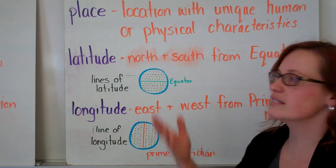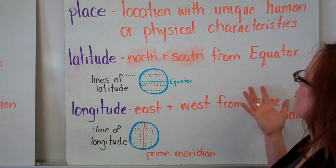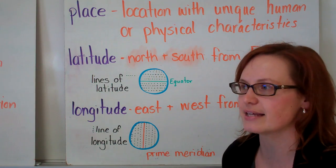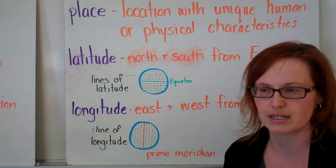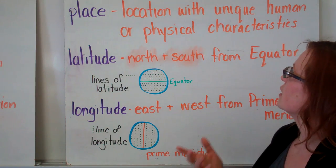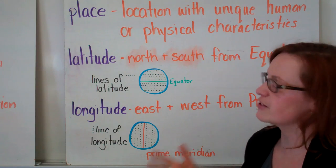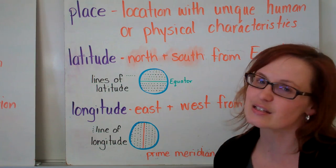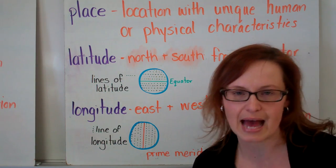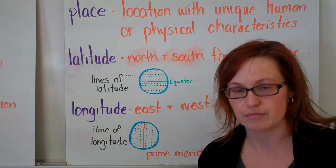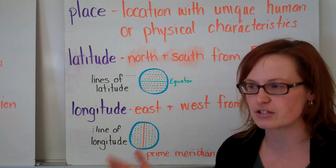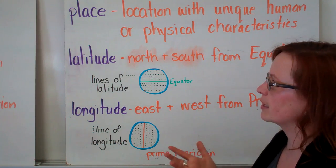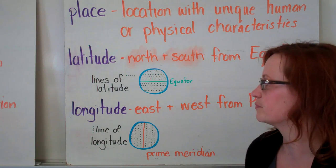Place. A place is a location with unique human or physical characteristics. For example, I could say the rainforest, and we could think about the physical characteristics of the rainforest. The place where humans inhabit would be the earth — it has specific physical and human characteristics, and it's where we live.